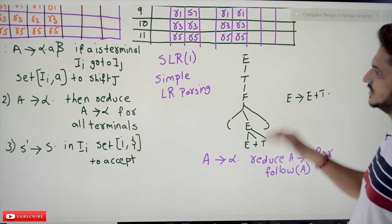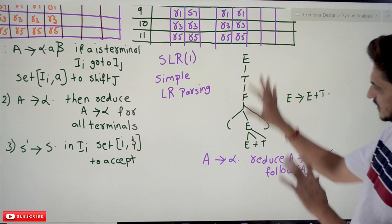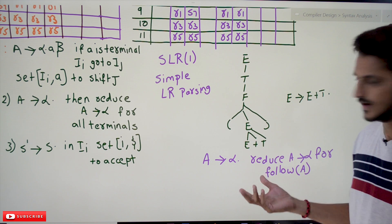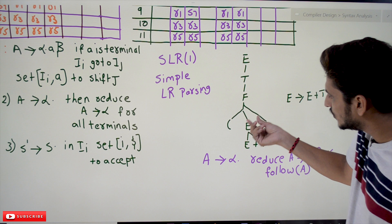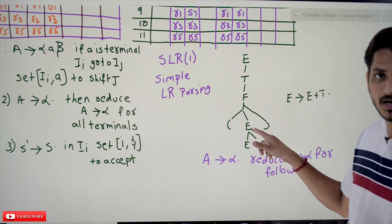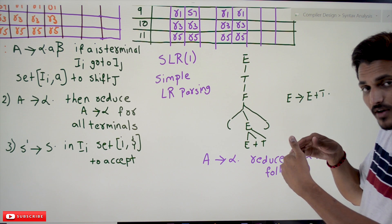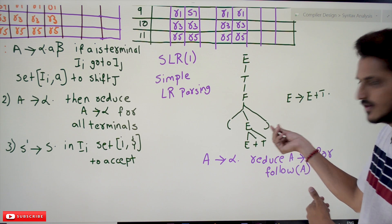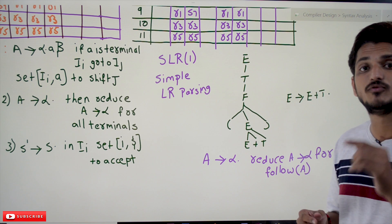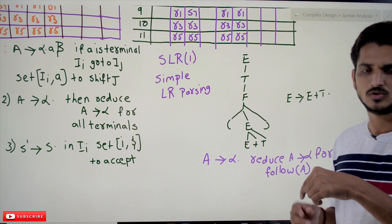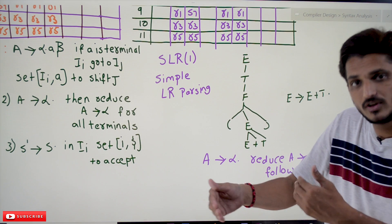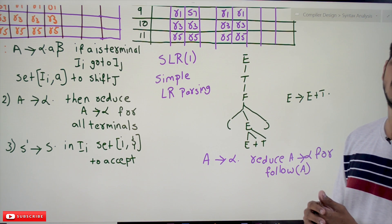Suppose somewhere in the derivation tree we have E plus T. If E plus T is completed and reduced to E, then E has been completed. The symbol that is going to appear after completion of E - we observed closed bracket here - that symbol we call the follow of E. After completion of E, the symbols that are going to appear we call them follow symbols.